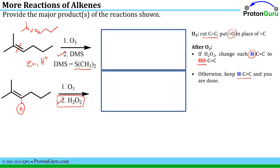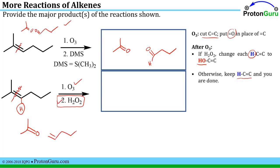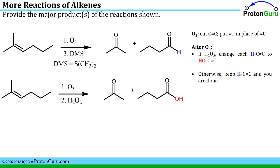Thinking about this on scratch paper, for the first ozonolysis example we cut the carbon-carbon double bond and make two fragments. For the second case with ozone, wherever there's a double bond to a carbon I'll make a double bond to an O. And because we have the hydrogen peroxide workup, I'll have to change this H into an OH. So I'd expect to see those products for this ozonolysis reaction.